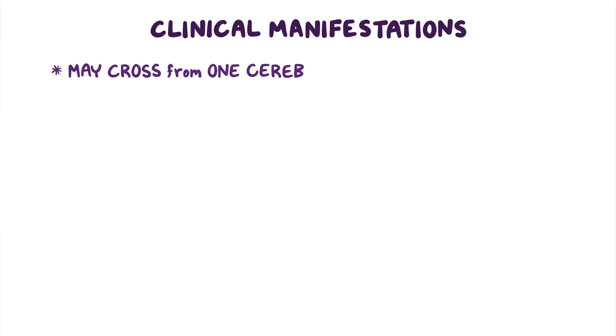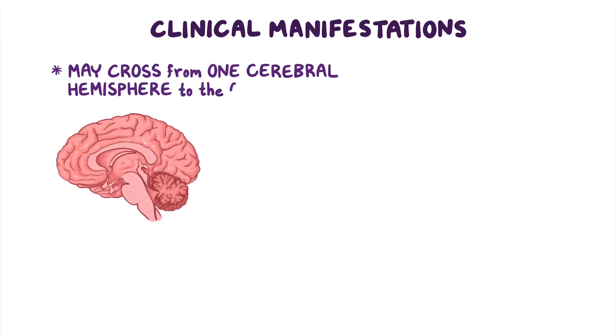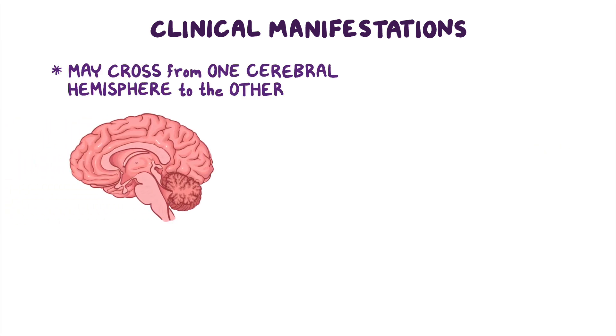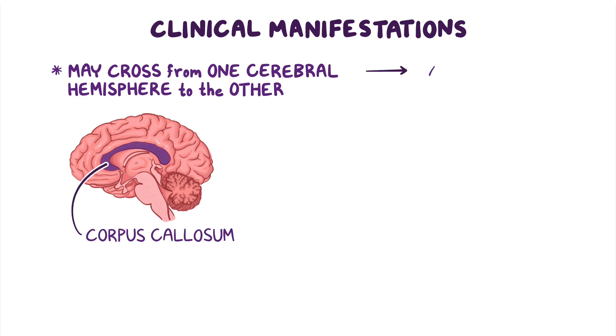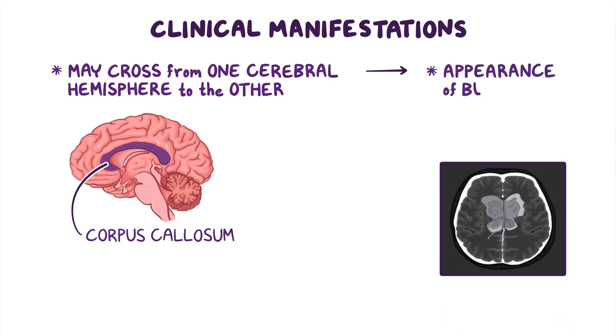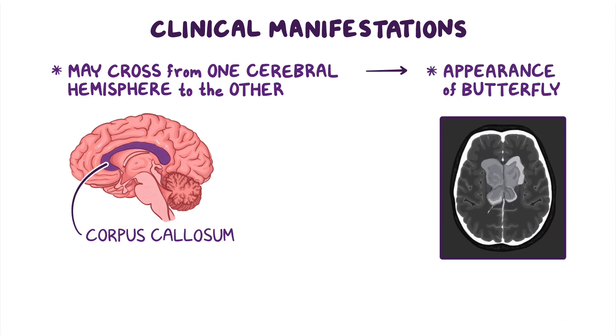Since glioblastomas tend to be aggressive and grow quickly, they may cross from one cerebral hemisphere to the other through a bridge of white matter called the corpus callosum, giving the tumor the appearance of a butterfly on imaging.